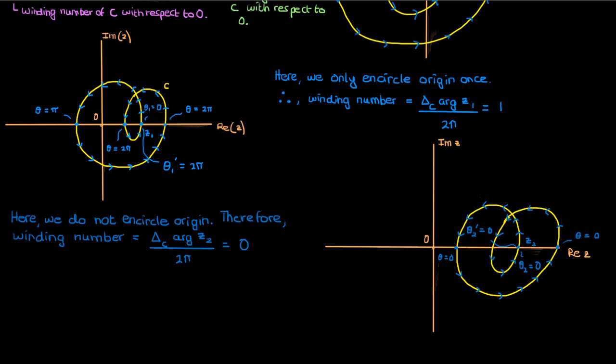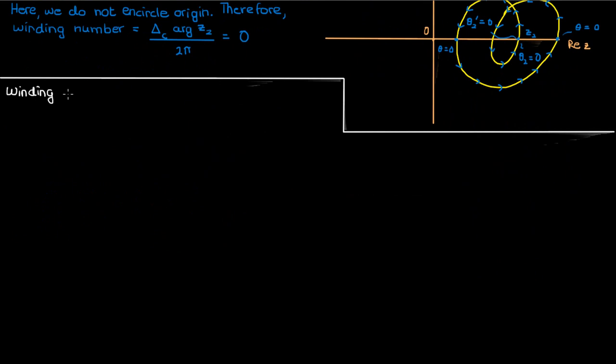The take-home message of all this is that the winding number with respect to a certain point of a curve is the number of times we go around that point as we travel the curve once. It should make sense to you that the winding number must be an integer — you can only go around something an integer number of times. Now there's an additional concept of the winding number of complex functions, instead of the more rudimentary winding number of a curve that we've discussed, and I'll go over that concept now.